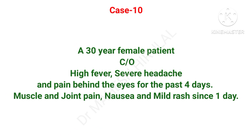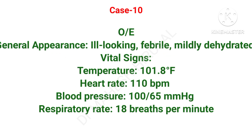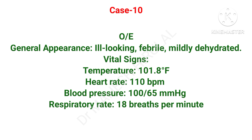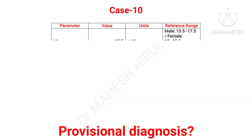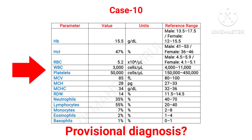A 30-year-old female patient complaining of high-grade fever, severe headache, pain behind the eyes since 4 days, associated with muscle and joint pain, nausea, and rashes since 1 day. On examination, patient looked ill, febrile, and dehydrated. Temperature is about 102°F, heart rate is about 110, and hypotension is noted. CBC shows reduced WBC count and reduced platelet counts. Guess the probable diagnosis and what further investigations are needed to confirm.